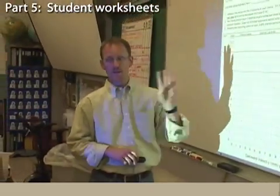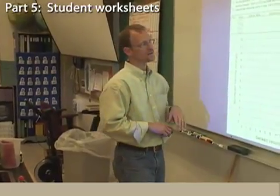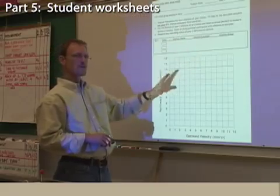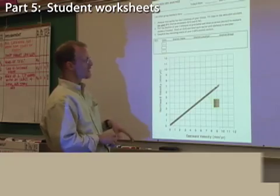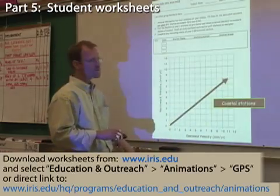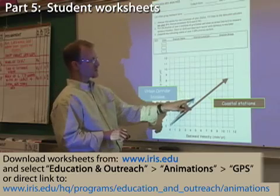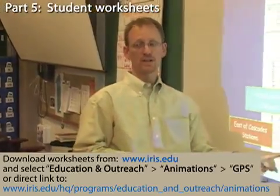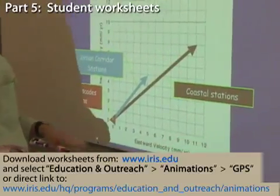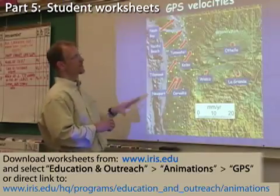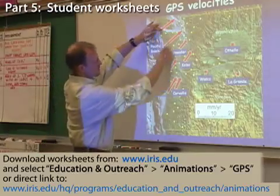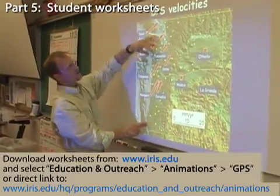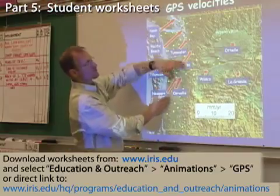The fourth step, once they learn how to read time series plots — and there's a series of questions that go along with that — is that they plot all those different vectors. You get the idea that the coastal stations are moving very far, the urban corridor stations are moving slightly less, and east of the Cascades stations are moving very little. Then you take that and put it on a map that shows the continental edge is moving much farther compared to the urban corridor, which is still moving in the same direction.